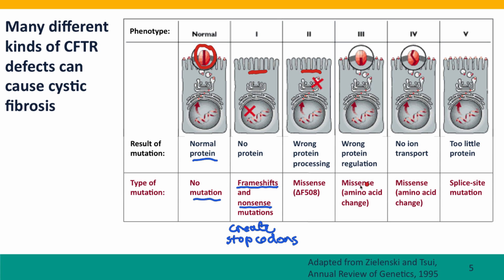Other mutations that change amino acids can still allow the protein to be inserted into the membrane, but it's defective either because it's not regulated correctly — so it's not turned on and off at the right times — or because the channel is defective and there's no transport. Finally, there can be mutations not in the coding sequence at all that affect splice sites. These result in too little protein being produced. Often splice site mutations are not absolute defects — some of the time the messenger RNA will be spliced correctly and some of the time it won't, so there may be some protein in the membrane but not enough to do the job.